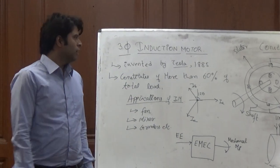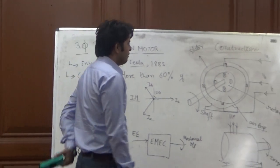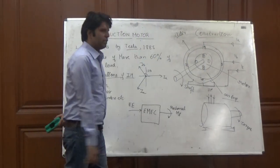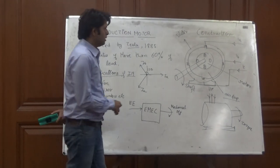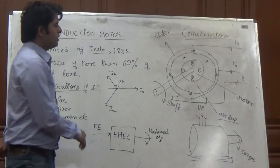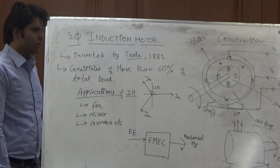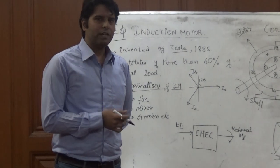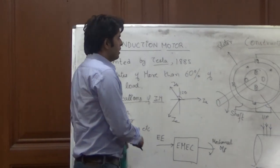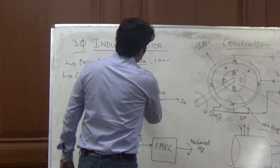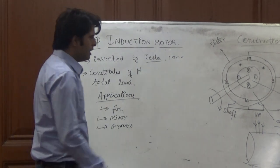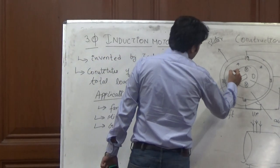So what happens? When we give supply to the 3-phase stator winding, a flux is produced inside the area. A magnetic flux is produced inside the rotor, inside the area.